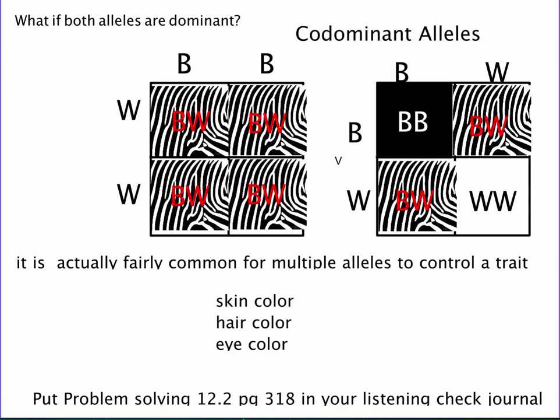What if both alleles are completely dominant? Let's call them black and white. If we cross these using their own letters because both are dominant, we're actually going to end up in the F1 generation completely striped. In the F2 generation, we get one black, one white, and two striped — an expression of both colors because they are both dominant. We're going to call this a co-dominant allele.